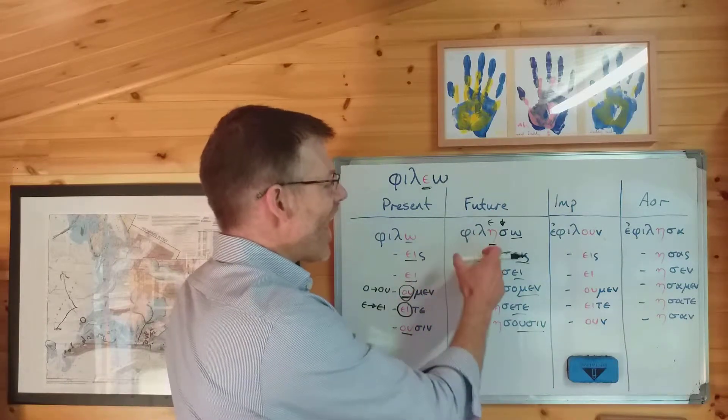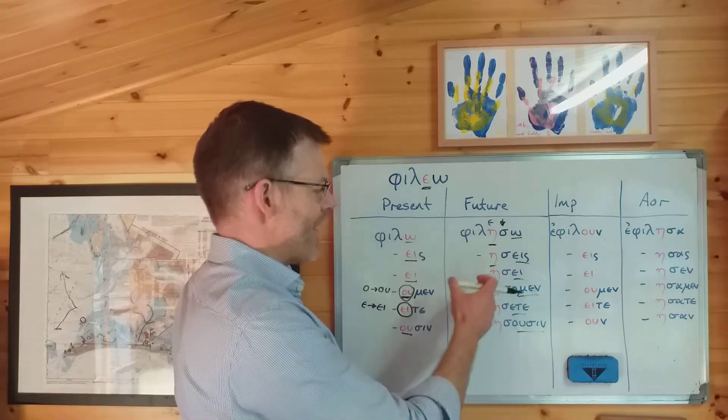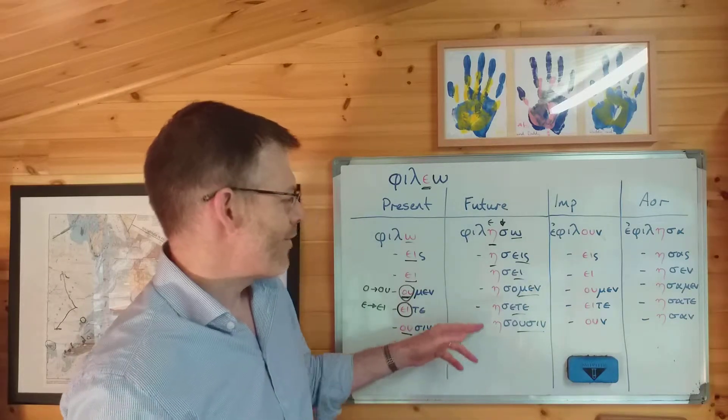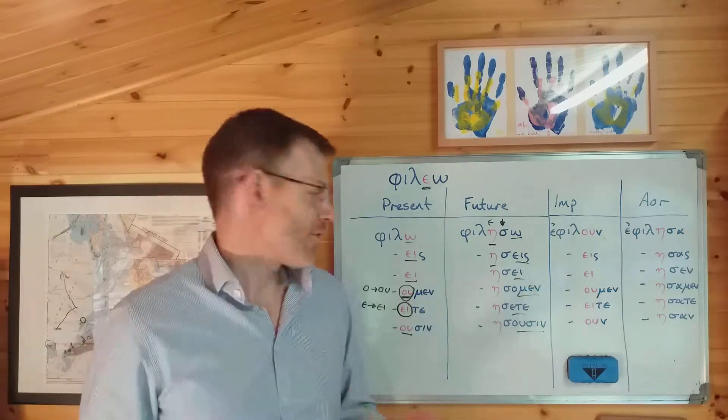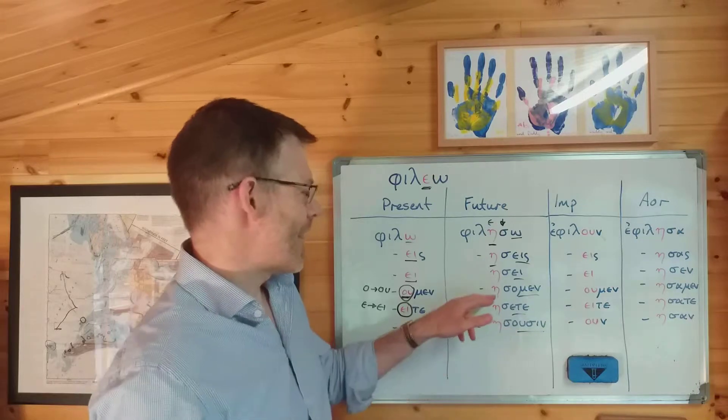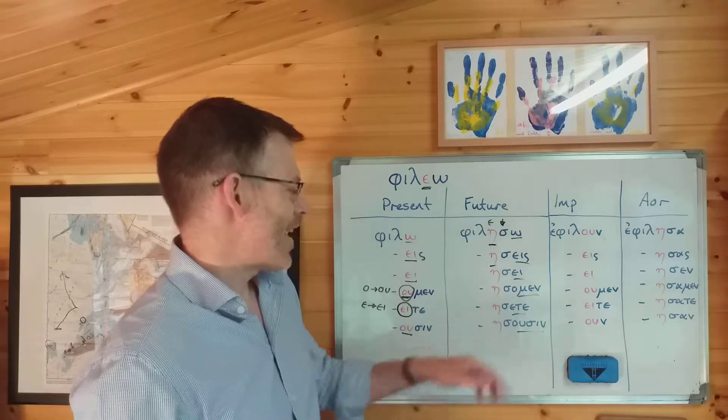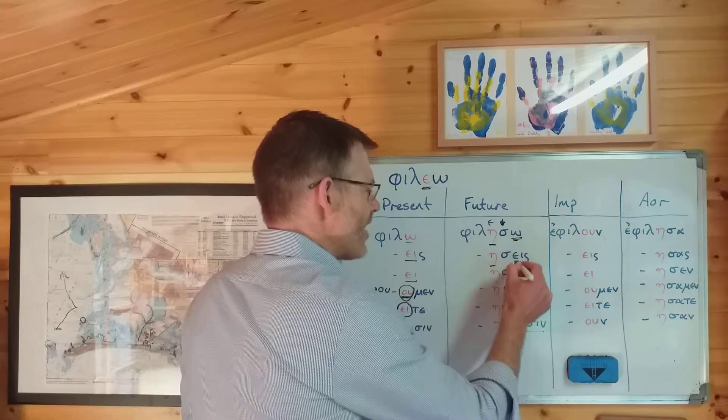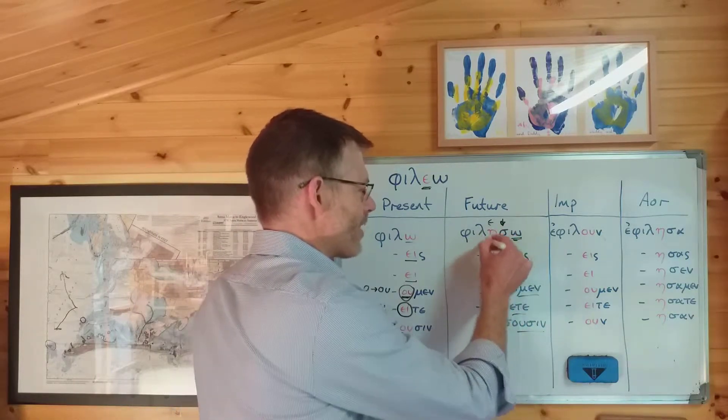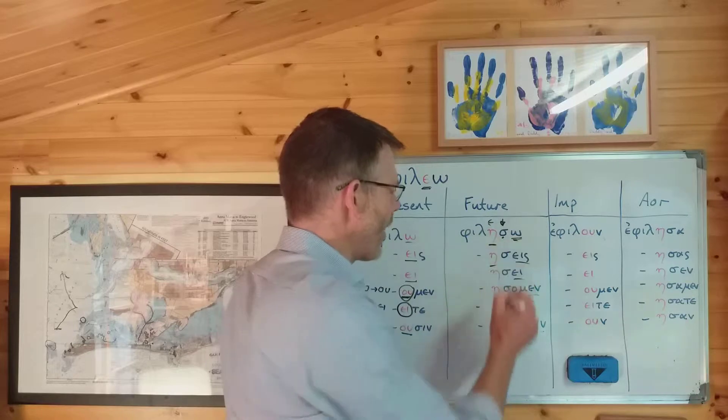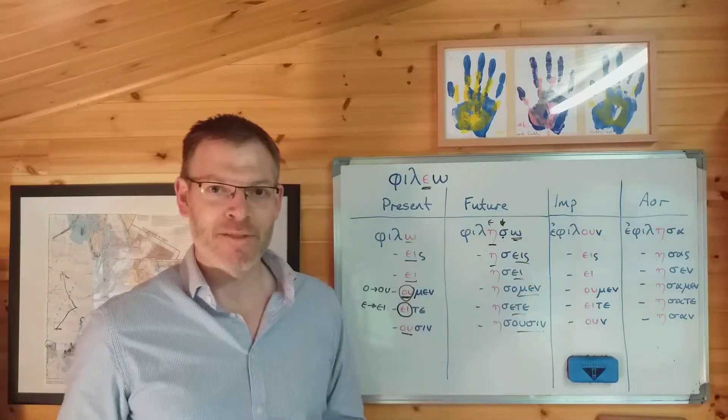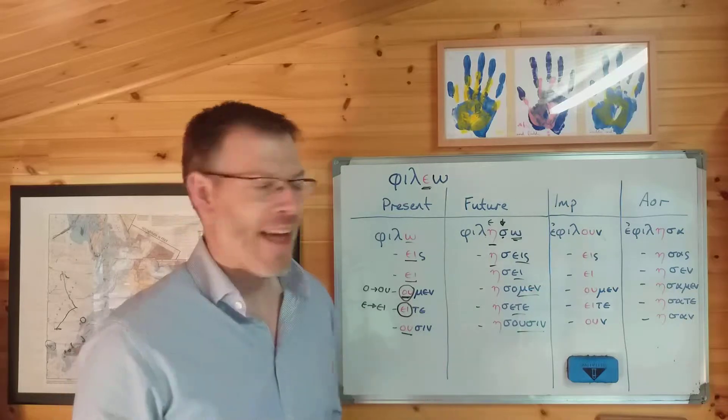So φιλέω goes to φιλήσω, φιλήσεις, φιλήσομεν, φιλήσετε, φιλήσουσιν. You see, sorry, φιλήσομεν, did I say φιλήσουσιν? φιλήσομεν, φιλήσετε, φιλήσουσιν. Just to recap, you can't change the ending to make this part of something big because there's a sigma in the way. The only thing you can do is to change the epsilon itself into a long vowel, the long eta.